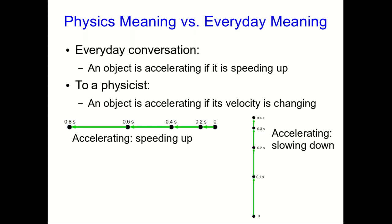But if something is slowing down, its velocity is changing, and so a physicist would say that a slowing down object is also accelerating. And finally, here's an object that's moving at constant speed, but the direction of the velocity is changing, and so this object is also accelerating.